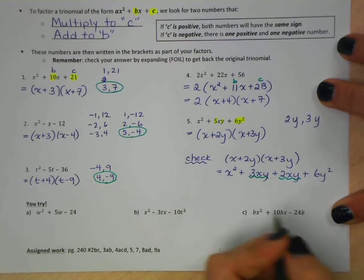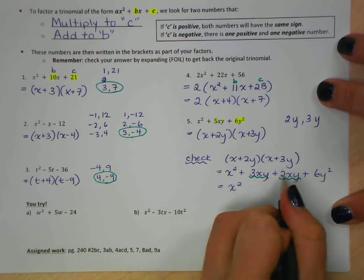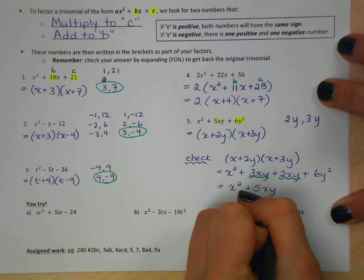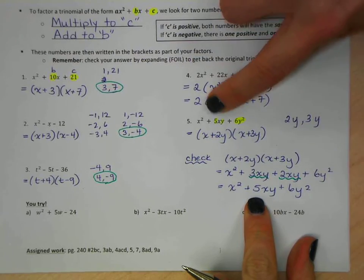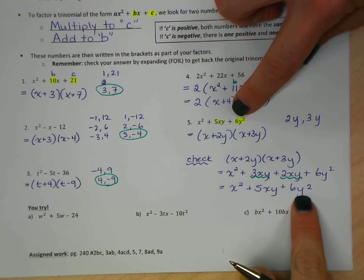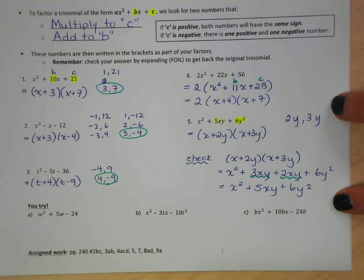We want to combine like terms. Those have the same variables so we can add them together. We're left with x squared. 3xy plus 2xy is 5xy. And 6y squared. So did we get back to our original trinomial? x squared plus 5xy plus 6y squared. Yes, we did. So we know that these two are factors of this trinomial.